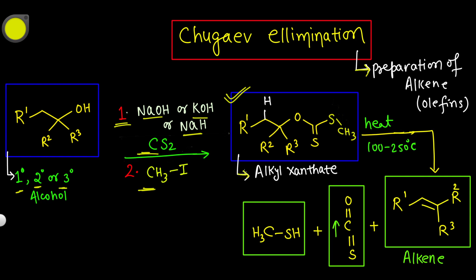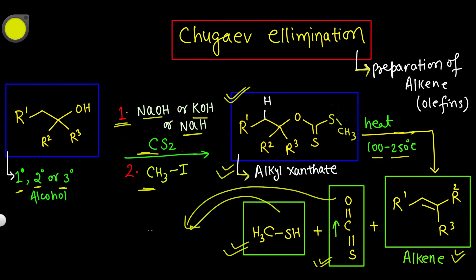You will get the alkyl xanthate from the first and second steps. After this, if you heat the reaction — the condition here is heat, 100 to 250 degrees Celsius — you will get an alkene as the major product. The byproducts are C=O and C=S species, which are very stable byproducts. The alkene is the major product.